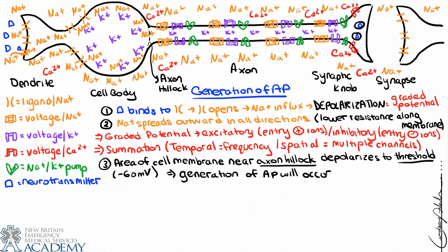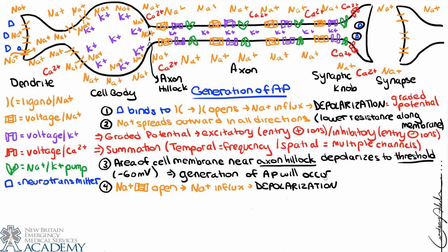The next steps are basically the beginning of the action potential. First, the sodium voltage-gated channel in the axon will open, and because the channel opens, we get sodium influx. Once again we have depolarization — this time much more rapid and much more positive. We'll depolarize until we reach about plus 30 millivolts. We're going to let so many sodium ions into the cell that we reach a membrane potential of plus 30 millivolts, and then around that time the sodium channels will close.